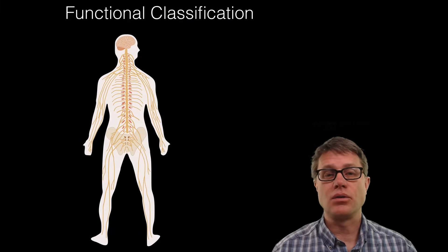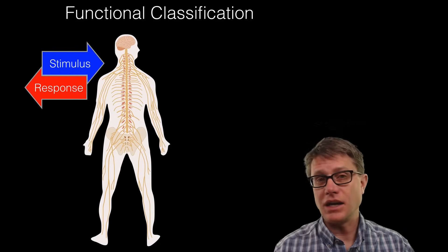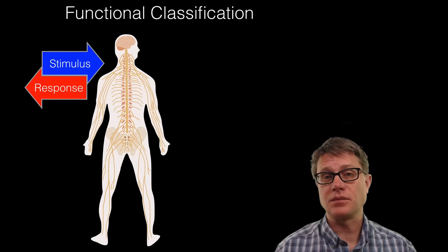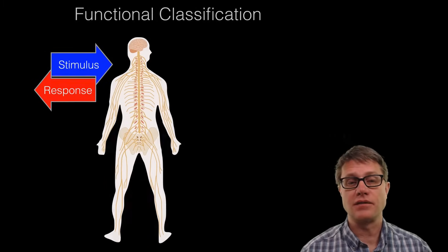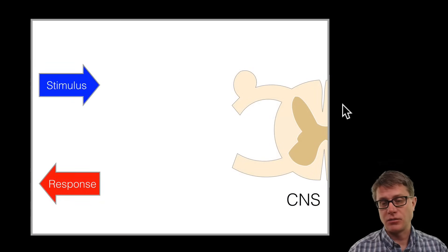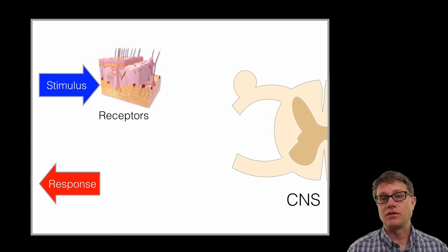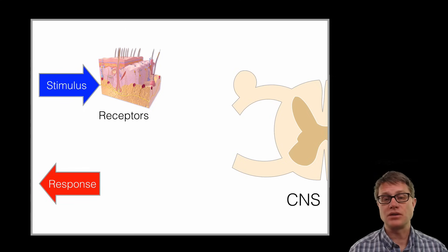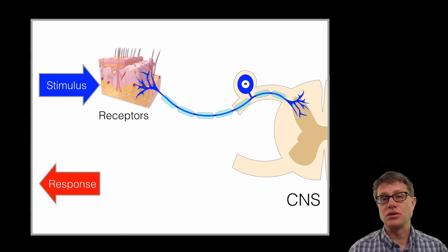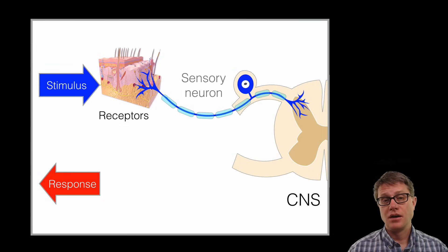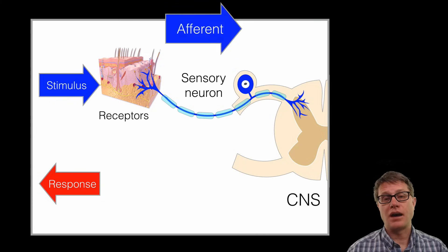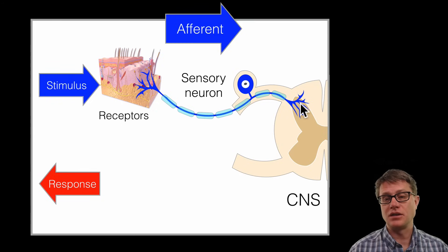Now neurons can also be classified according to their functional classification — those that take in information, stimulus coming in from our environment, and then the response that we have. If we look at a cross section of the spine, we are taking information in from receptors — these could be in the skin, for example: touch receptors, heat receptors, pain receptors. And so we have to transmit that information to the central nervous system. Those neurons that bring information in are sometimes referred to as sensory neurons or afferent neurons. You can see this is a unipolar neuron and it is transmitting that information into the central nervous system.